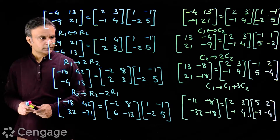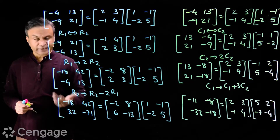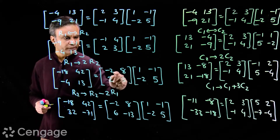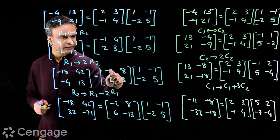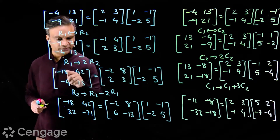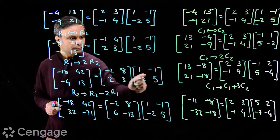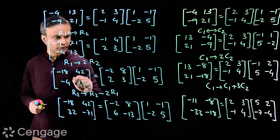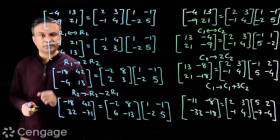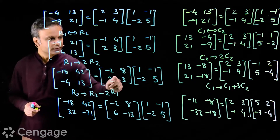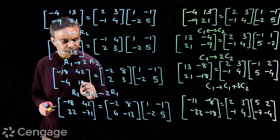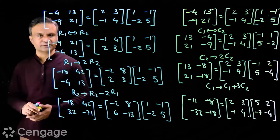Now again there is one magic. If I multiply these two matrices, what I get: -2, -16, -18, 2 + 40 = 42, 2 - 6 = -4, -2 + 15 = 13. So this row operation is reflected in the product matrix.